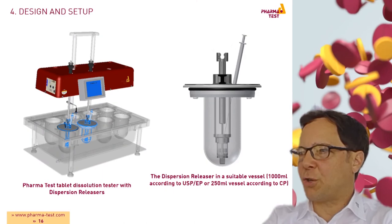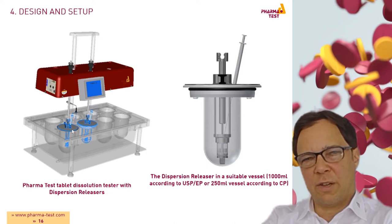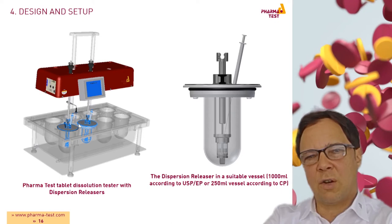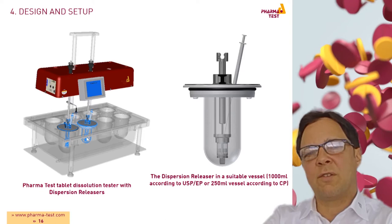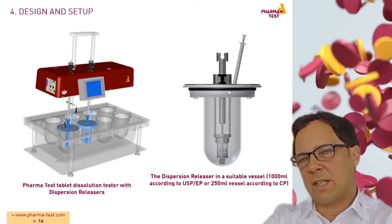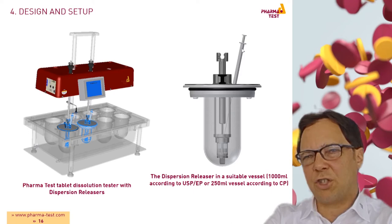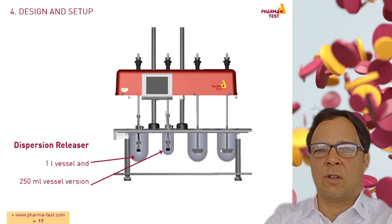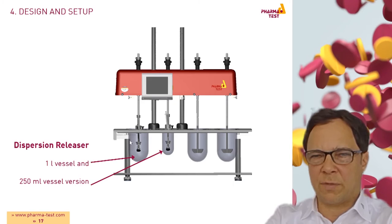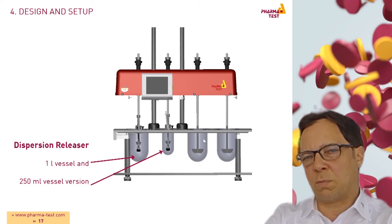This picture shows a standard USP2 dissolution tester with dispersion releasers. On the left side a dispersion releaser is placed in a 1.0L standard USP vessel. On the right side we have a dispersion releaser placed in a 250mL vessel which was designed according to Chinese pharmacopoeia. On the right side here we see how a formulation can be injected via a syringe into the donor compartment of the dispersion releaser. On this picture we have another view on the dissolution tester, with dispersion releasers on the left side and the typical USP2 apparatus on the right side.